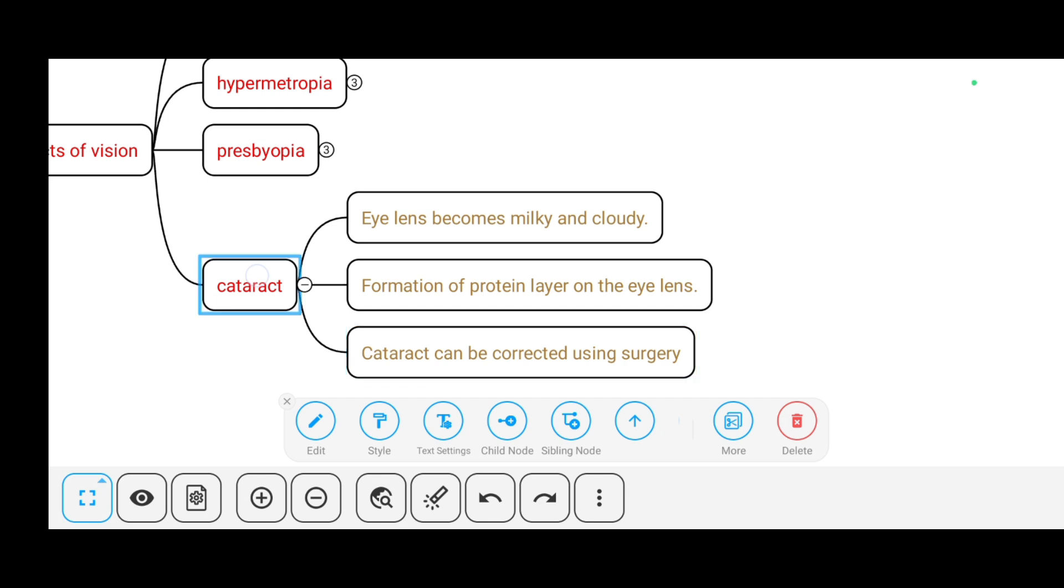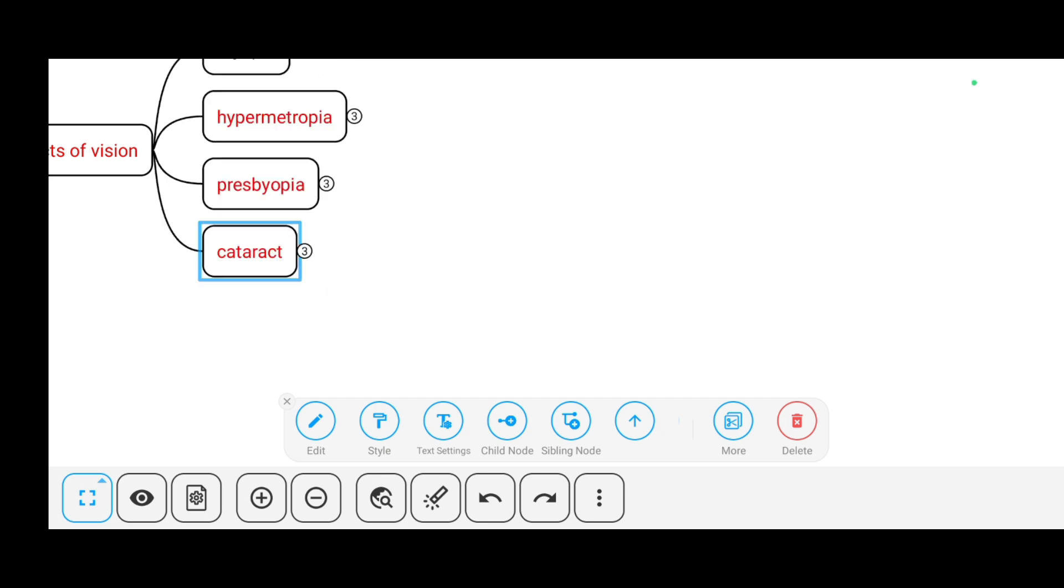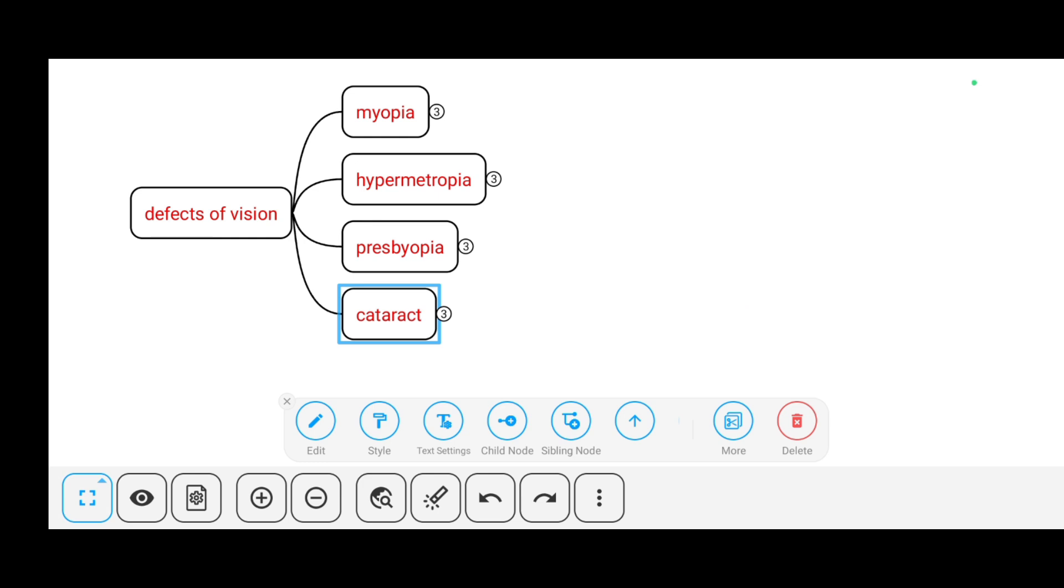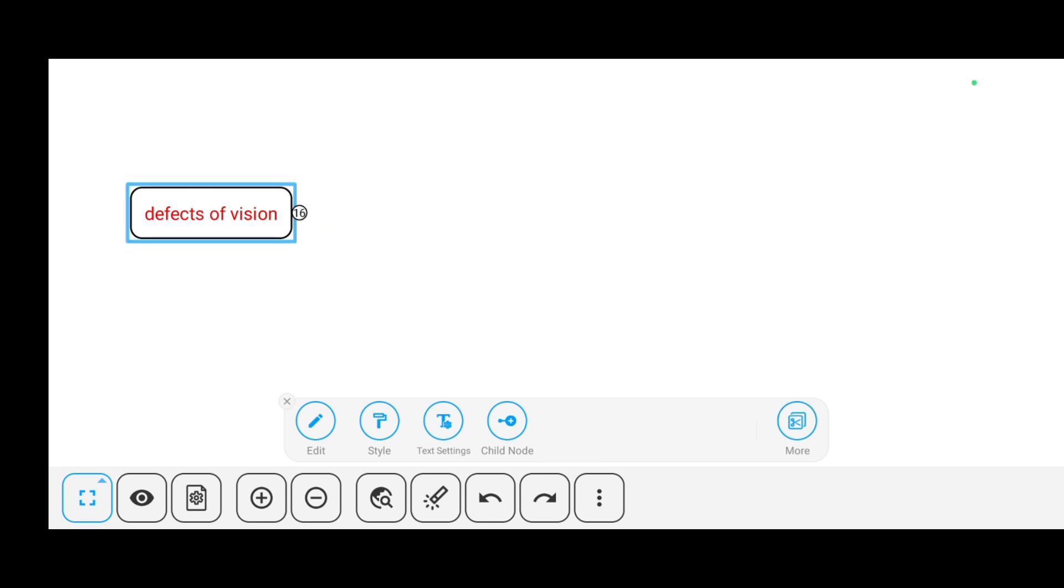So these are the four important defects of vision in our NCERT 10th grade physics. For each defect we have seen what it means, its causes, and how to correct it. Thank you very much for watching this video.